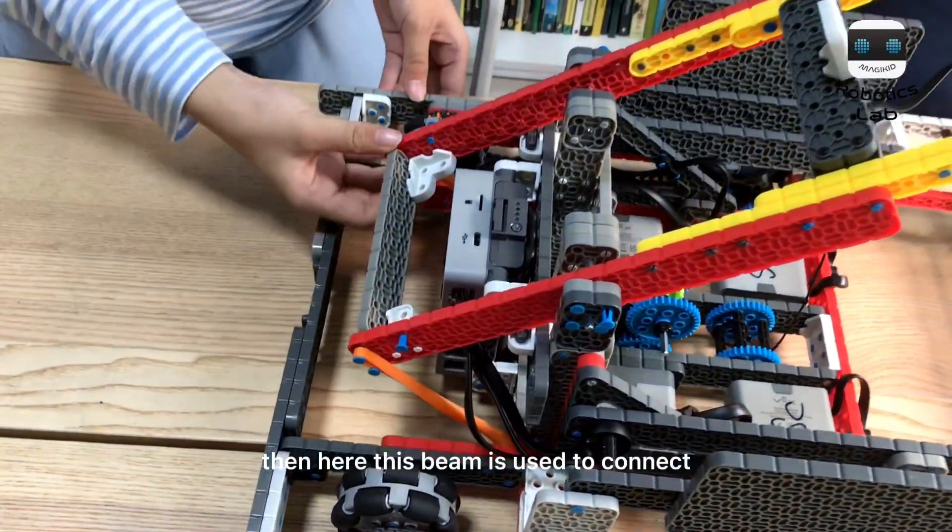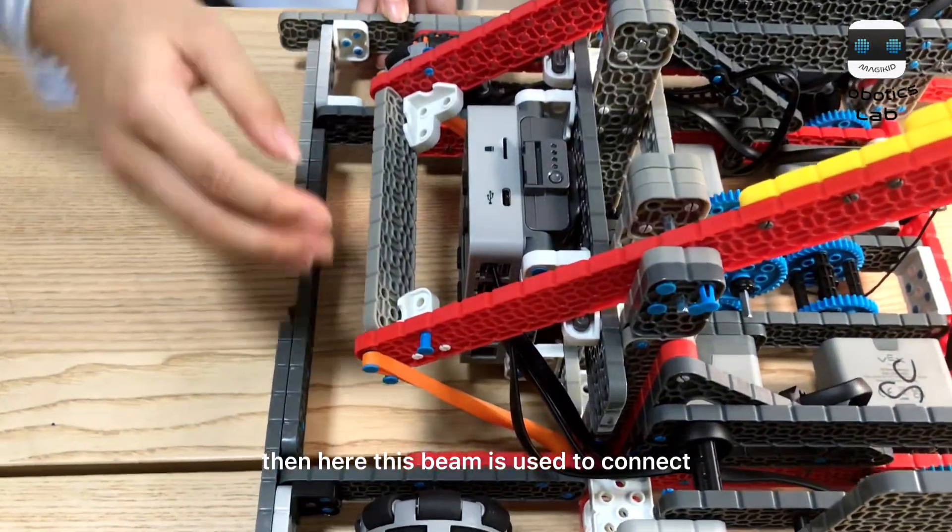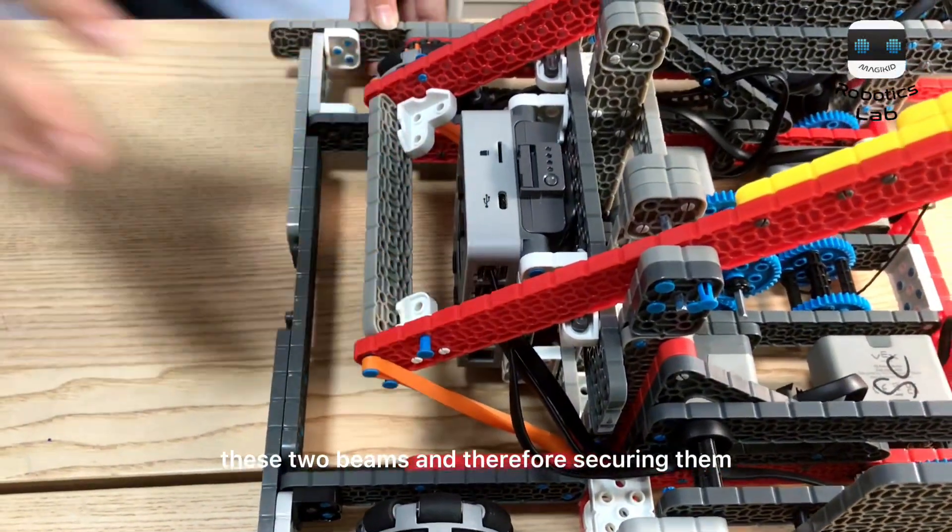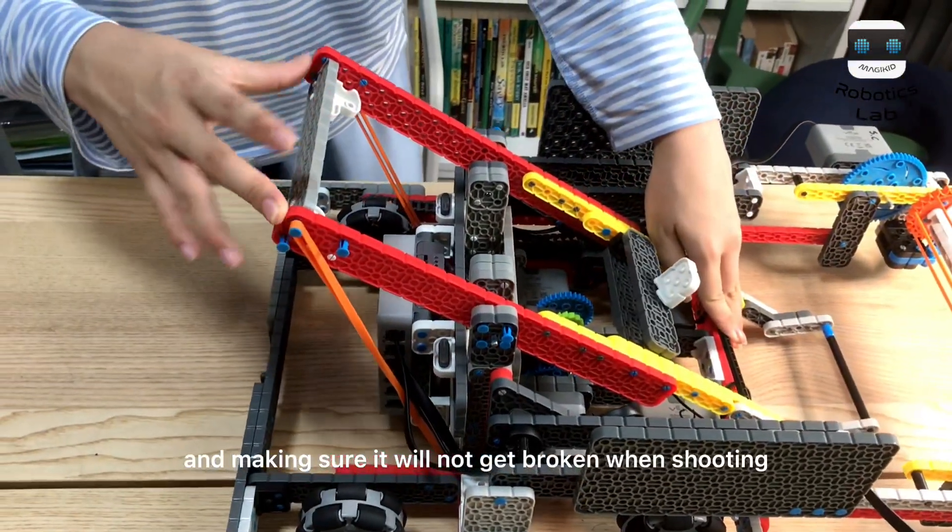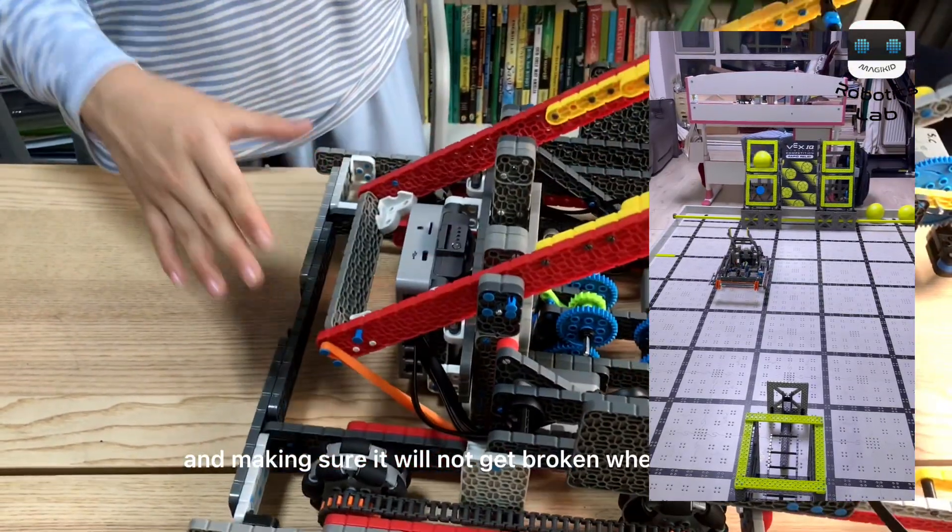Then, here, this beam is used to connect these two beams, and therefore securing them, and making sure it will not get broken when shooting.